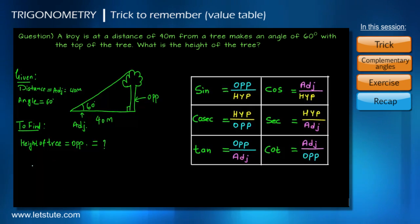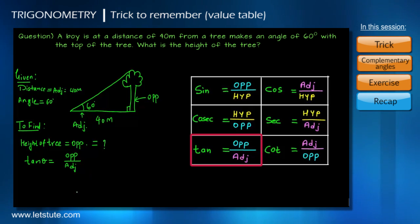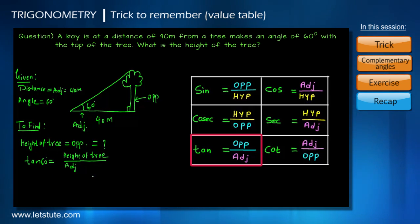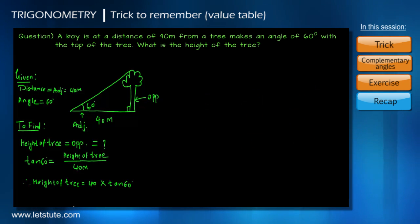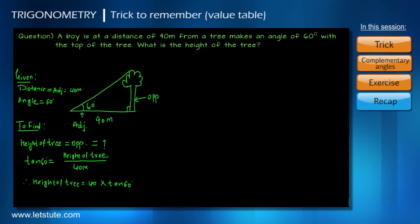I need a formula involving angle, opposite side, and adjacent side — and we know that is the tangent ratio. Therefore we write tan 60° equals the height of the tree upon 40 meters. So I know the adjacent side and I need to find the height of the tree, but I need the value for tan 60°.